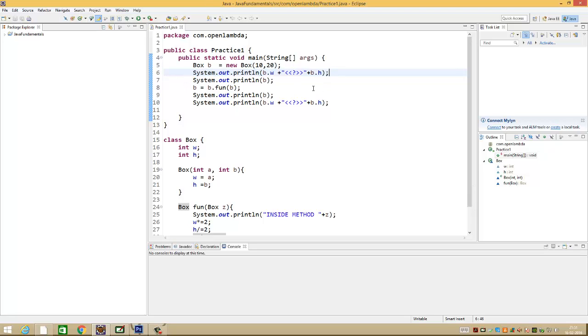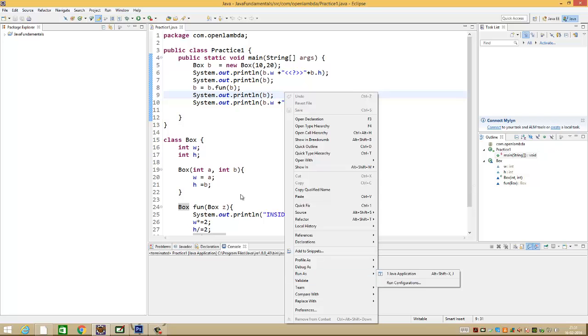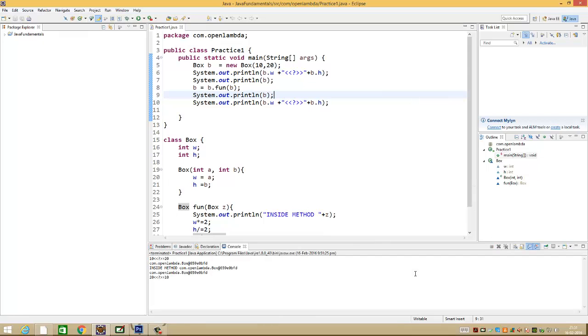I am trying to get the value. So now when I try to print this, let me run the program. Every now and then this Eclipse gets hanged. It takes some time to recover. Okay, I think it is recovered. Run the program. Observe here. Initially the values of this object was 10 and 20. That is what it has printed through this particular statement.